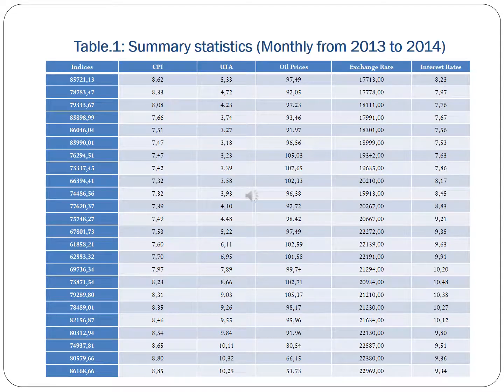In this table, you are going to see the dependent and independent variables with data. The BIST index is our dependent variable, and exchange rate, interest rates, oil prices, money supply, and inflation columns are our independent variables.